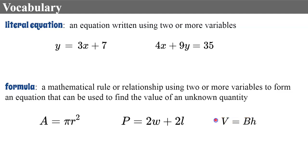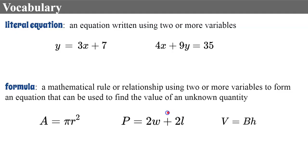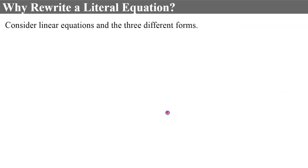We can rewrite these formulas so that we can find the relationship of what the radius is relative to the area, or what the relationship of the width is if you know the perimeter and the length. You're probably familiar with solving for the width if you're given the perimeter and the length when you have values. But today we're going to make sure you know how to rewrite them without having those values. Let's begin.